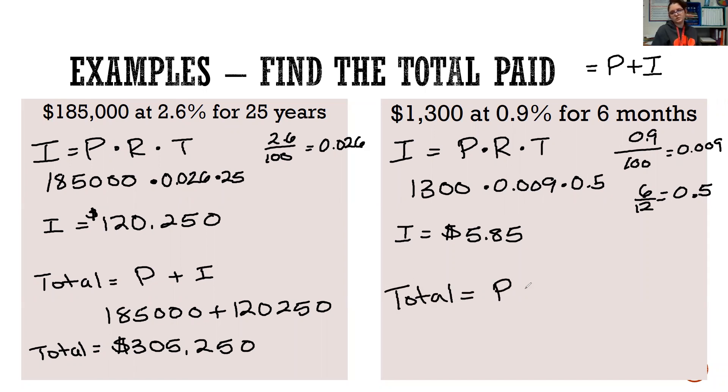So to find our total, we will do principal plus interest. So 1300 plus $5.85 gives us $1,305.85 for our total.